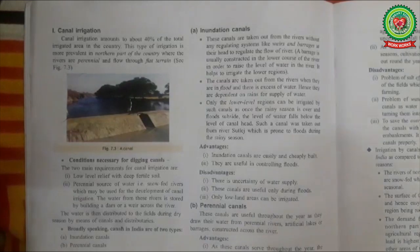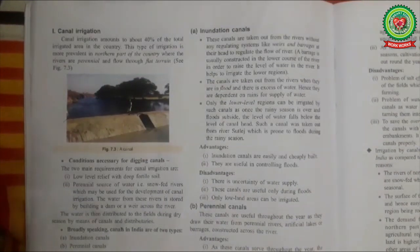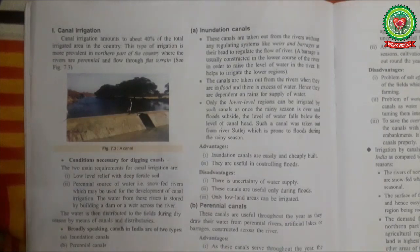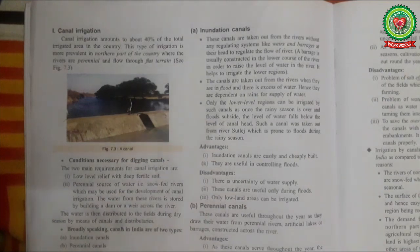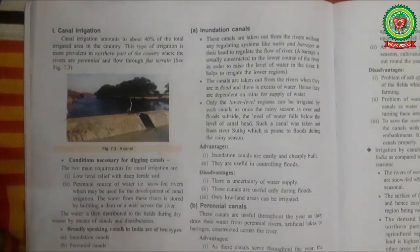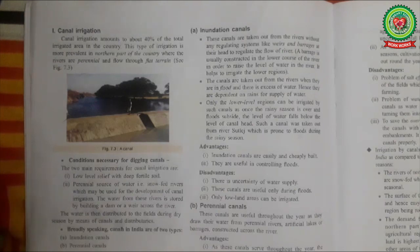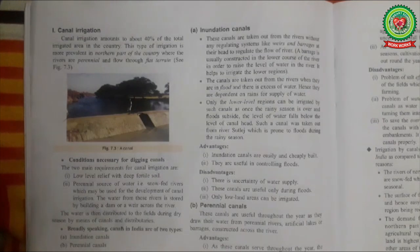Before starting canal irrigation, let's note that this topic is very interesting, especially for those of us from urban settlements who are not exposed to rural life. It is interesting to know how different ways of irrigation work — they were invented and developed to ensure water supply 12 months around, not only for the 4 months when it is raining. Canals are channels used to carry river water to fields and can be perennial or inundation canals, useful for every farmer by providing water throughout the year.